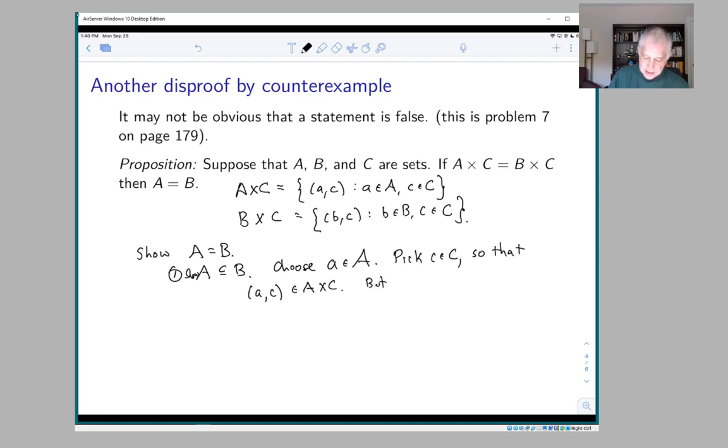so that (a, c) therefore belongs to A × C. But A × C = B × C, so (a, c) must also belong to B × C, and the only way that can be the case is if a belongs to B.